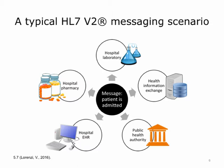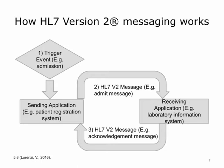Imagine a typical HL7v2 messaging scenario where a patient is admitted to the hospital. In HL7v2 terms, this event is referred to as a trigger event. The trigger event then leads to the patient admission being recorded in the registration system, and a message is generated and sent to the receiving systems. The message will be sent to the hospital EHR and the hospital laboratory. It might also be sent to the hospital pharmacy, the public health authority for syndromic surveillance purposes, or a health information exchange. The health information exchange might then notify the patient's primary doctor that the patient has been admitted to the hospital. Each system that receives the admission message would process it based on their application logic, and in many cases, a new visit record would be created on the receiving system.